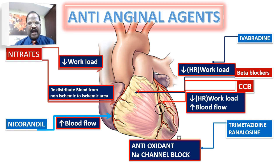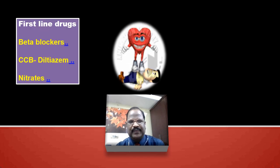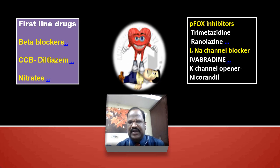Among the anti-anginal agents, the first-line drugs useful for treatment of angina are beta blockers, calcium channel blockers like diltiazem, and nitrates. The second-line drugs useful for treatment of angina include fatty acid oxidation inhibitors like trimetazidine and ranolazine.